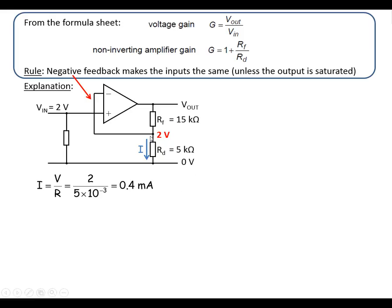For the next stage, we know that we've got 0.4 mA flowing through this resistor. It's also flowing through this resistor as well. No current goes into the input of the op-amp. It's got infinite input impedance. So we can work out V out, and V out is going to be the voltage across the 20 kΩ that we've got in total there.